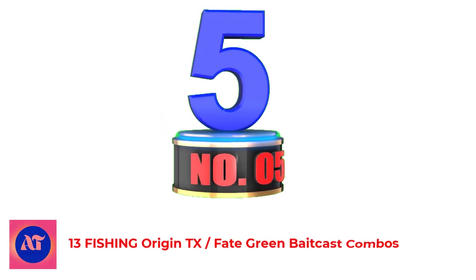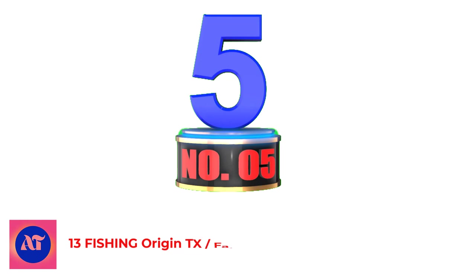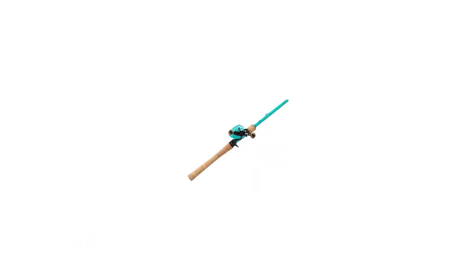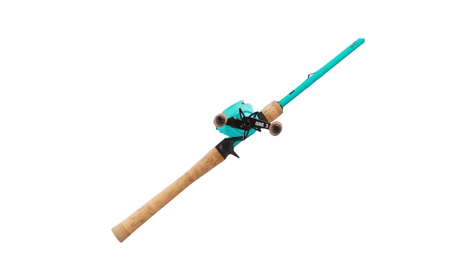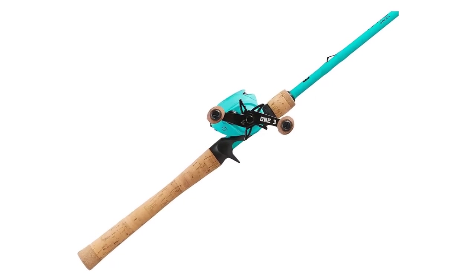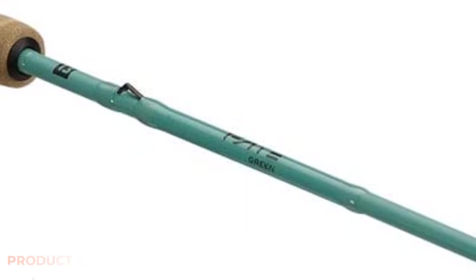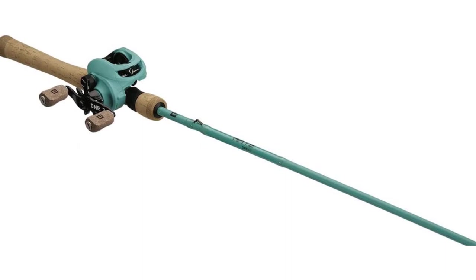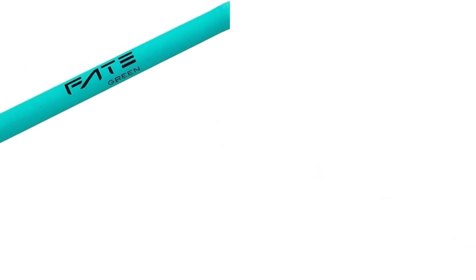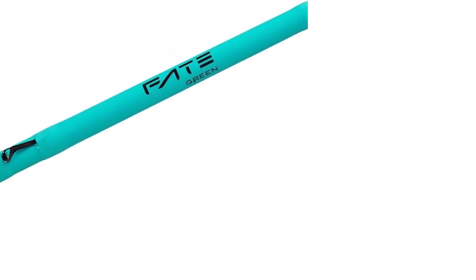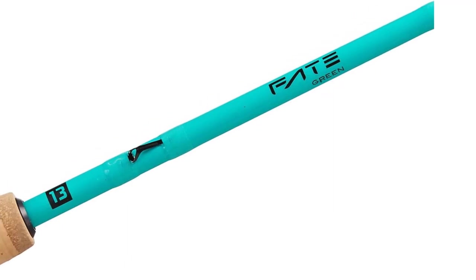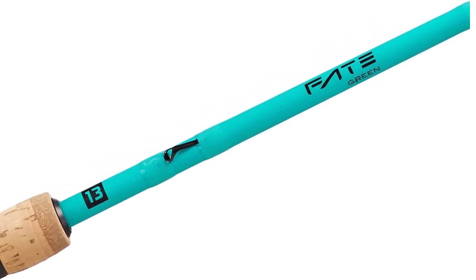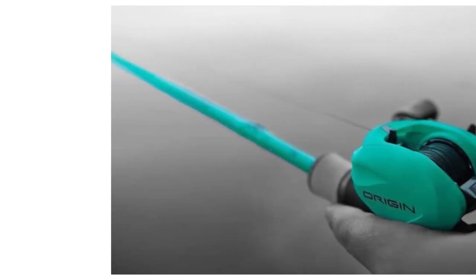Number 5. 13 Fishing Origin Texas Fate Green Bait Cast Combos. Finding a bait casting rod, let alone a reel at an affordable price, is nearly impossible for saltwater anglers. Rather than risking your freshwater gear in the salt, the 13 Fishing Origin Texas Fate Green Combo is a solid option that doesn't break the bank. It can be hard to keep salt out of the reel with so many moving parts. The frame is corrosion-free, so you don't have to worry about rust. In addition, the reel has 18 pounds of max drag and a large capacity spool to stop long runs.